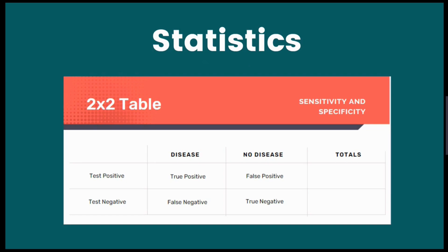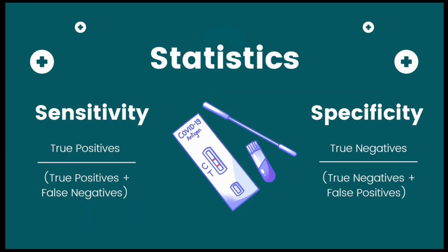Often, a two by two table should be included, which tells you the amount of true positives, false positives, true negatives and false negatives there are. As long as you know these four figures, you can calculate sensitivity and specificity.